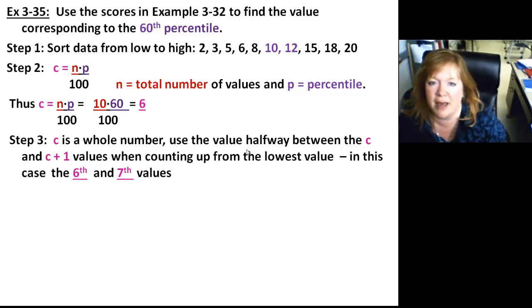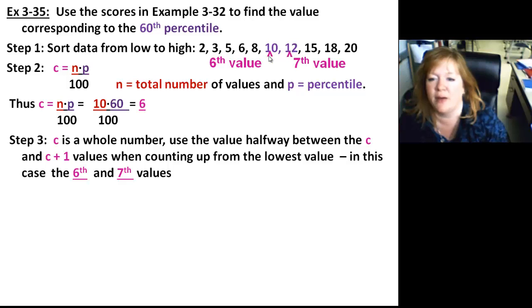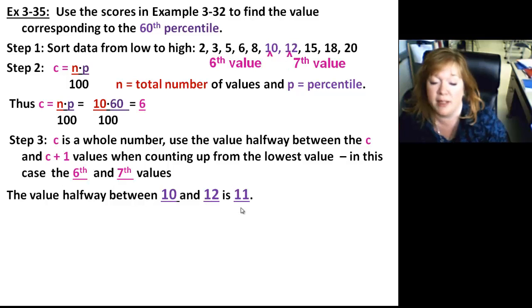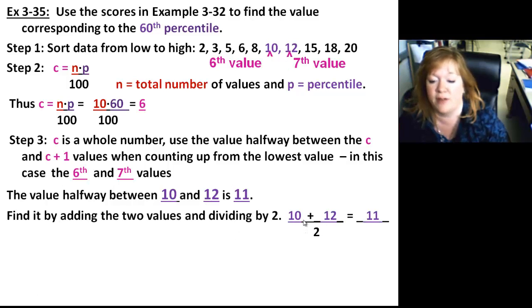So since C is a whole number, what you do is you use the value halfway between C and C plus 1. C is 6, so we're going to be using 6 and C plus 1 would be 7. So we're going to be using the value between the 6th and 7th value. There's my 6th value, that's the 10. 7th value is the 12. We need the value halfway in between there. In order to find that, we do 10 plus 12 divided by 2. That case is 11. So that's what you do if C is a whole number.